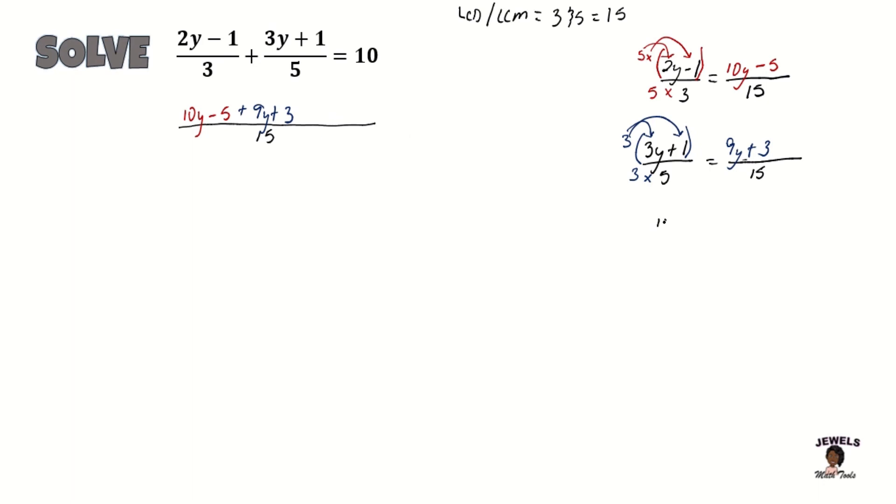And now for our last term which is 10. And because 10 is a whole number, we know that with our whole numbers, their denominator is 1. So we're going to be changing again this fraction also to where it has the denominator of 15. And we know that 1 times 15 is equal to 15. That means 15 will be multiplied by 10 which will equal to 150. So our equation is now equal to 150.